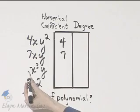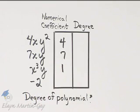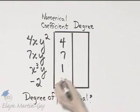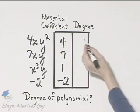This term, there's an understood 1 times x cubed y, so its numerical coefficient is 1. And here I have negative 2, and that is the numerical coefficient. What is the degree now?